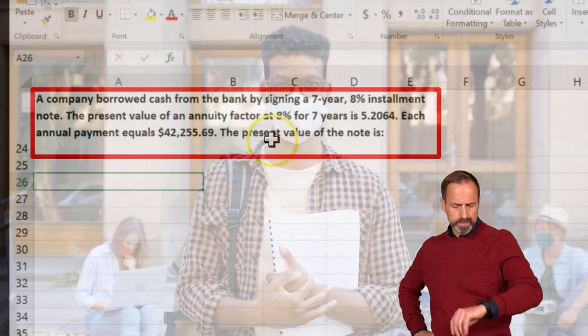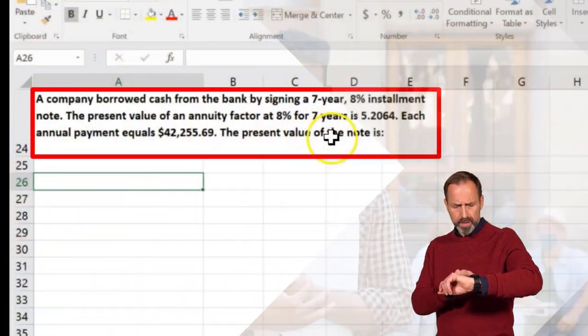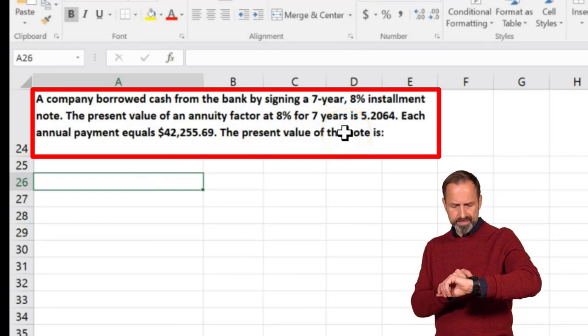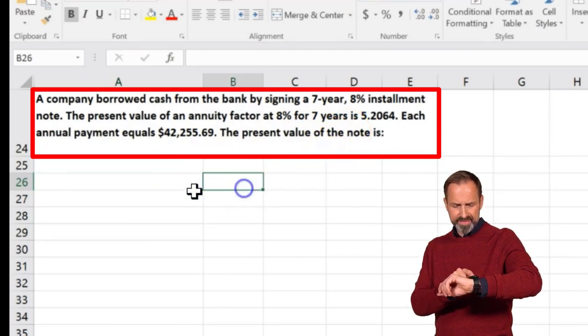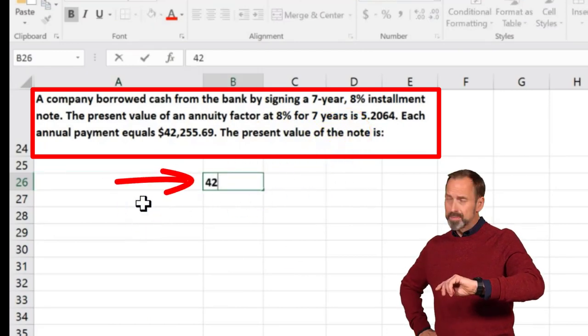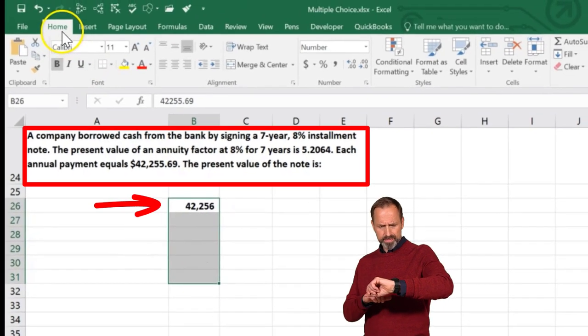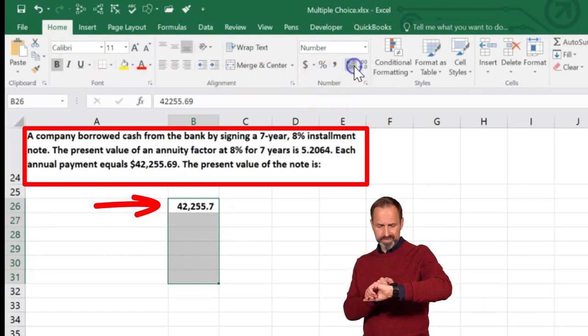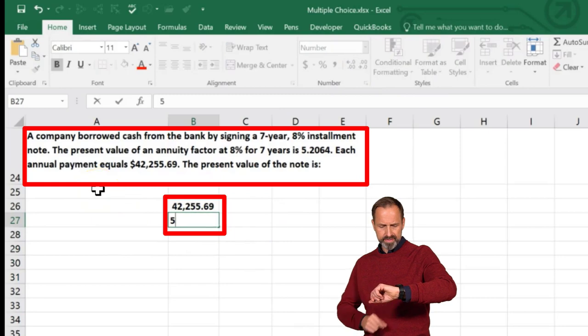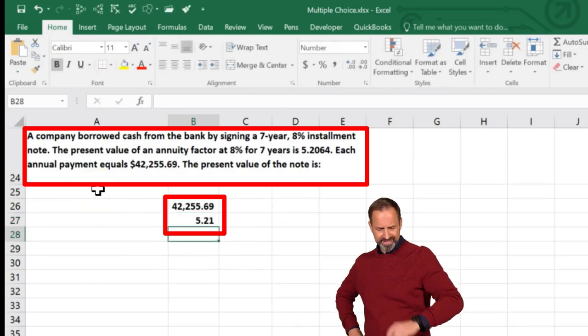Assuming 8% for seven years, we're going to have the 5.2064. So now we have constant payments of $42,255.69. I'm going to highlight all of these and go to Home tab, Numbers, add the pennies onto that.